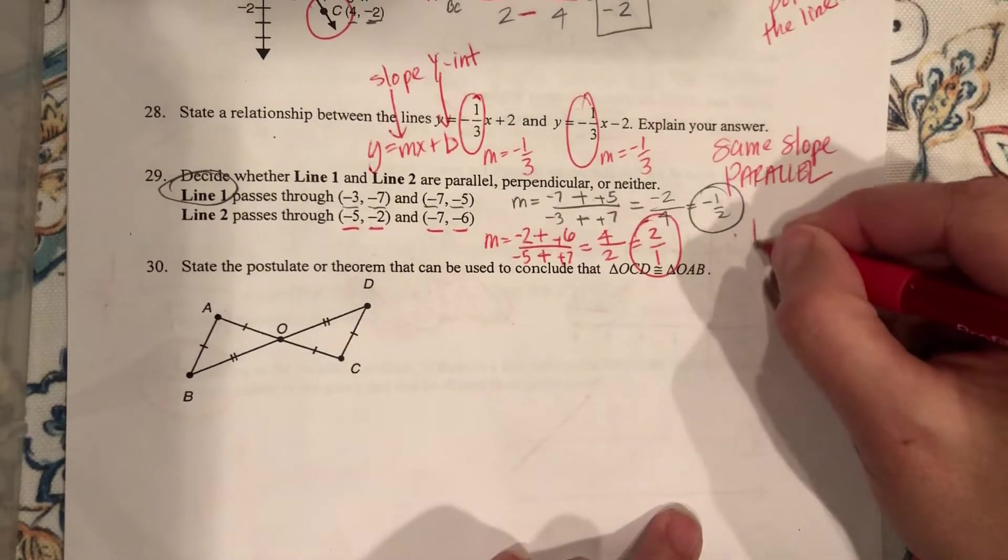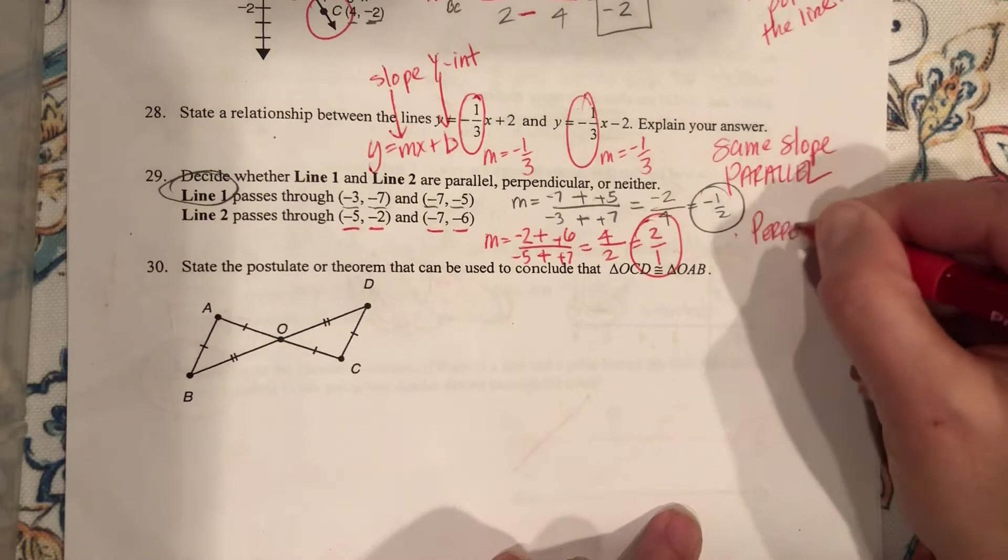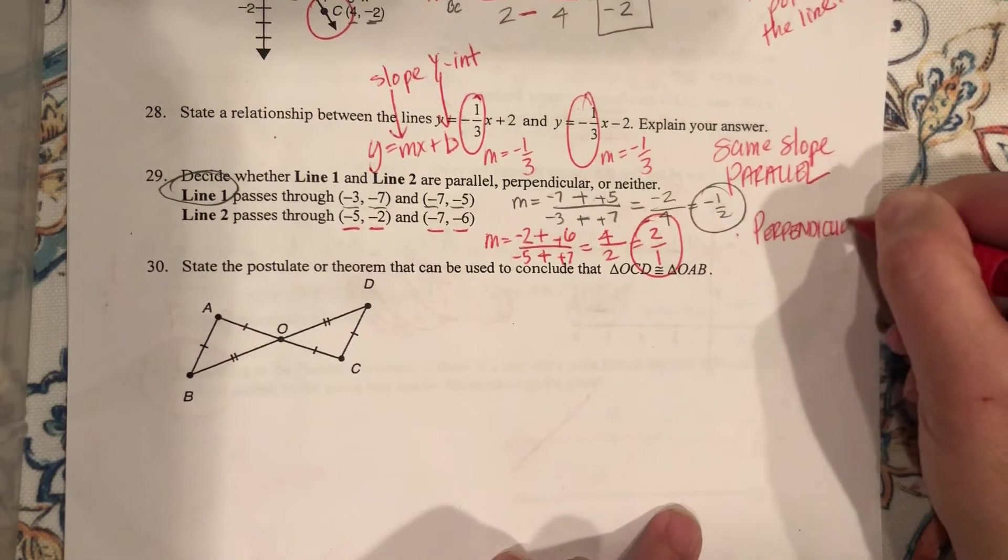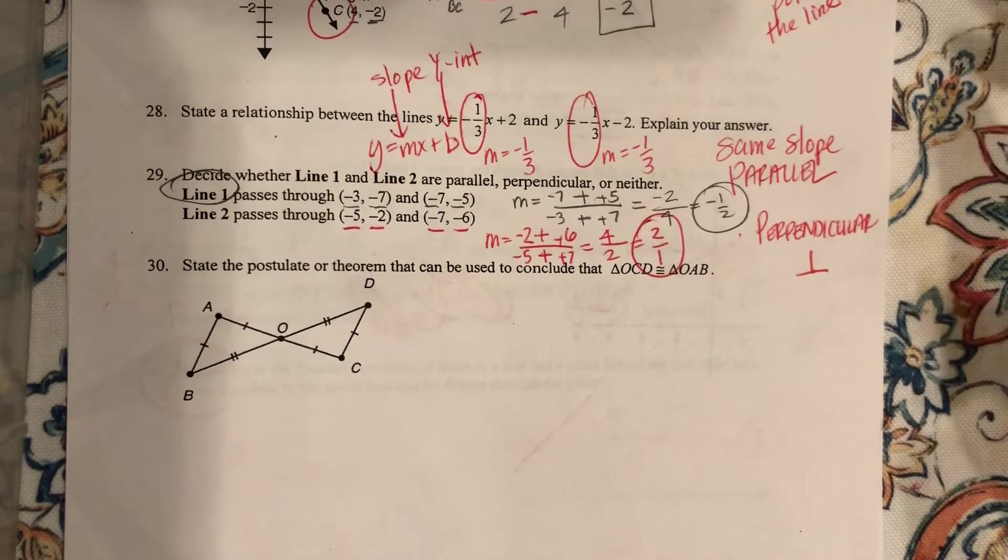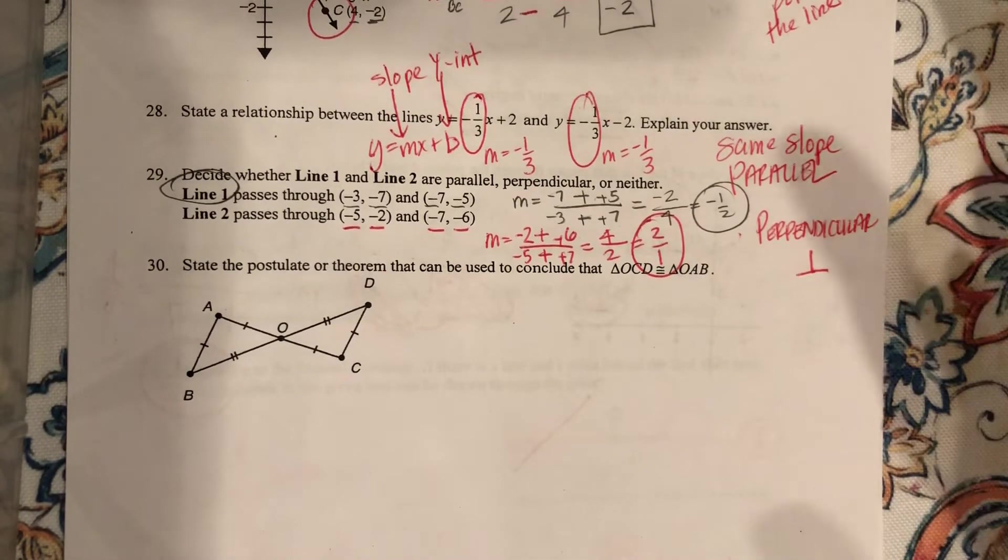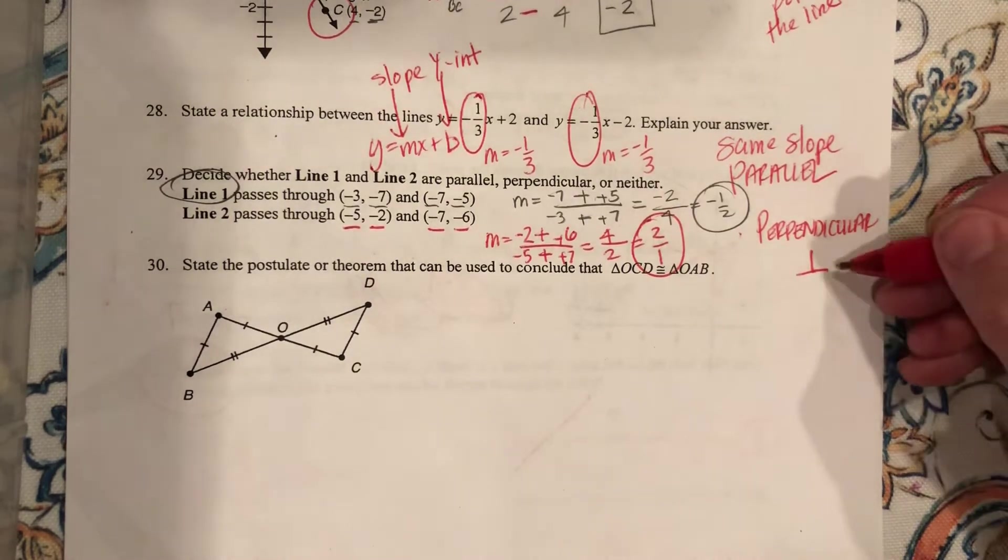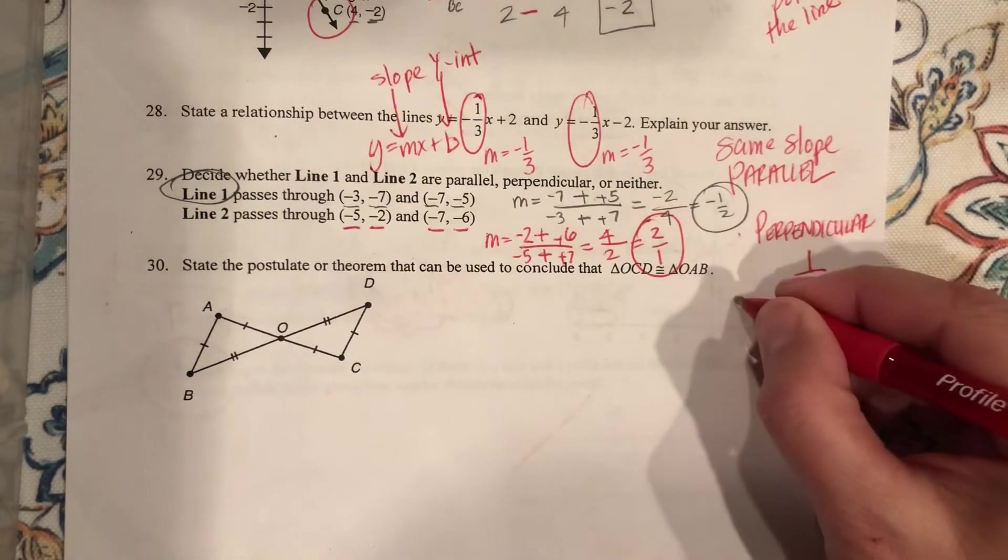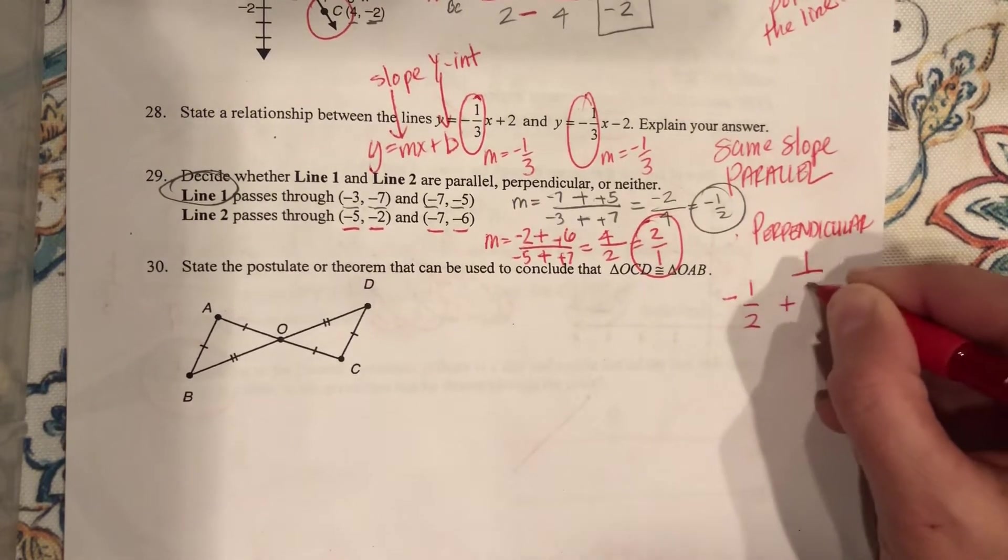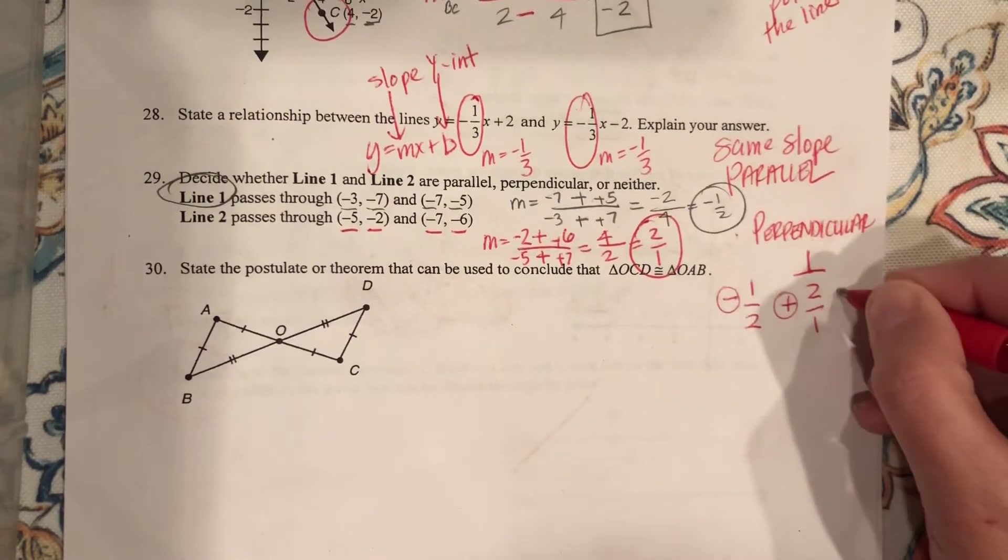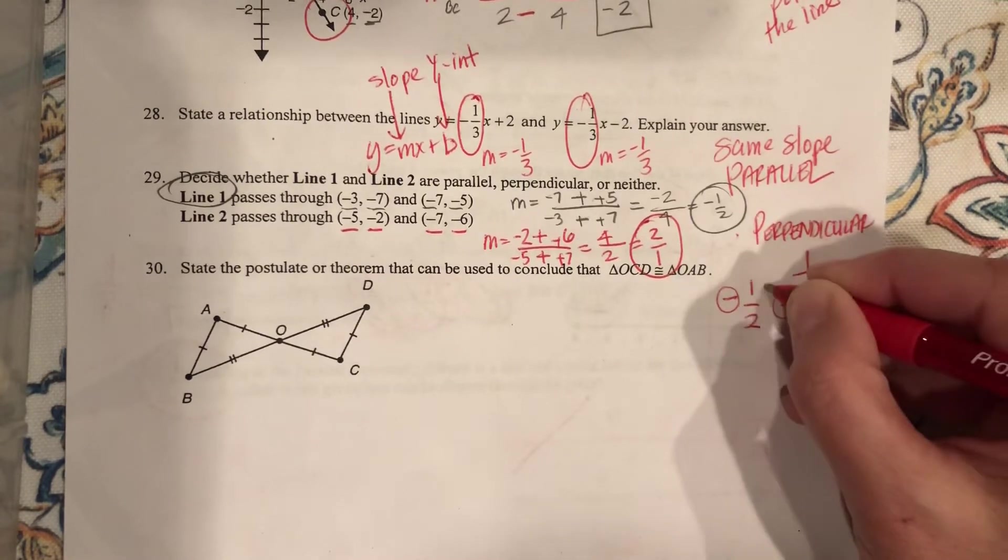These are what we call perpendicular because they have opposite reciprocal slopes. The upside down T for my classes because I love symbols. I like using this because what do I have? I have a negative 1 over 2 and a positive 2 over 1. They are opposites, and they are reciprocals.